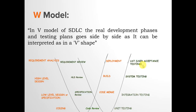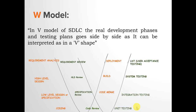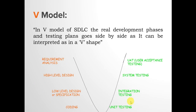UAT stands for User Acceptance Testing. When working in the V model, there are three testing teams involved. The first is unit testing, which is executed by the developers themselves. The second is the SIT team — System Integration Testing — which is a separate team. The third is the UAT team, which is specifically assigned to perform user acceptance testing.